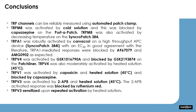In conclusion, we have recorded several different TRP channels using different stimuli. TRPM8 was activated by cold solution and blocked by capsazepine. TRPA1 was activated by carvacrol and blocked by A967079 and AMG0902. TRPV4 was activated by GSK1016790A or heated solution and blocked by GSK2193874. TRPV1 was activated by capsaicin or heated solution and blocked by capsazepine. TRPV3 was activated by 2-APB or heated solution.